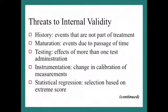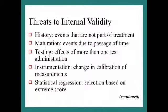Now we'll talk about specific threats to internal validity — there are about nine of these. The first is called history: events that are not part of the treatment. For example, in a study evaluating the effects of a semester of physical education on the fitness of fifth graders, 60% of children also participating in a recreational soccer program would constitute a history threat to internal validity.